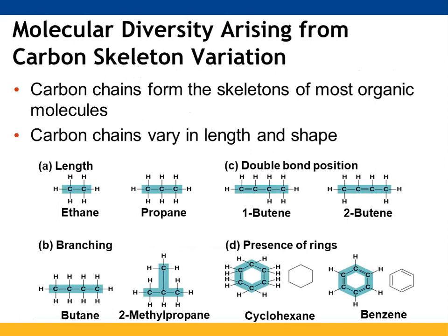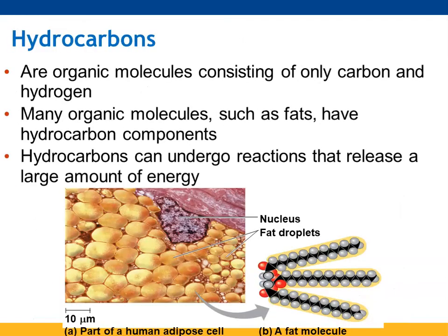There's a lot of diversity within organic molecules, especially within the carbon skeleton. They can have different amounts of carbon, different locations for multiple bonds, branching where carbons aren't in a straight line, or they can form rings. Hydrocarbons consist of just carbon and hydrogen. They make up membranes and serve as an energy source — for example, as fuel for vehicles. When hydrocarbons undergo combustion reactions, they release significant amounts of energy.